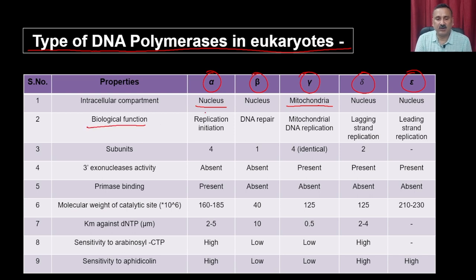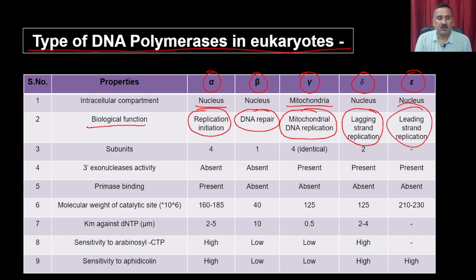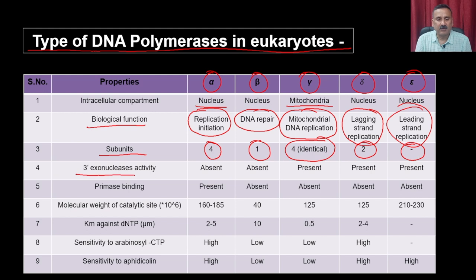The biological functions of these polymerases are: alpha is involved in replication initiation; beta is involved in DNA repair; gamma is involved in mitochondrial DNA replication; and delta and epsilon are required for replication of the lagging and leading strands respectively. In terms of structure, alpha is a tetramer, beta is a monomer, gamma is a homo-tetramer, delta is a dimer, and the structure of epsilon is not known. Primase binding is present in alpha but absent in all other DNA polymerases.